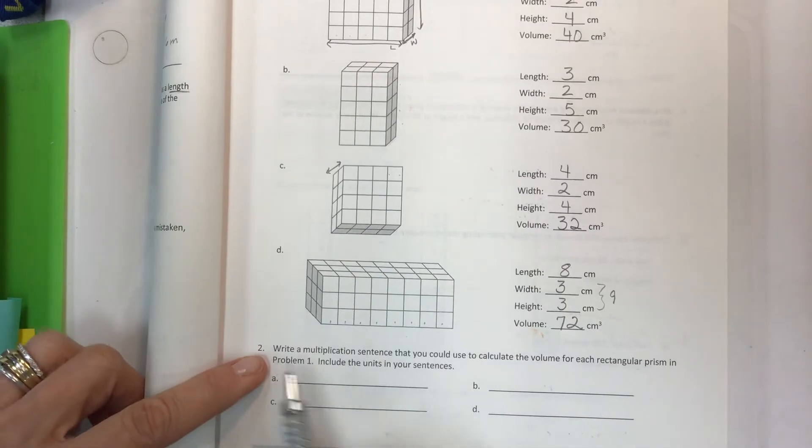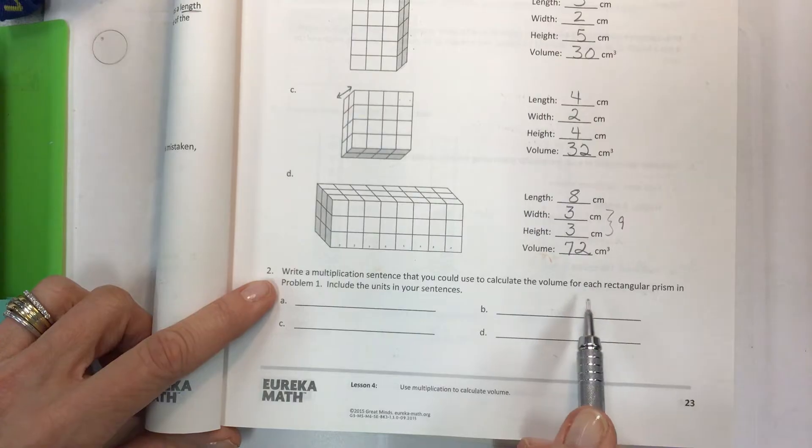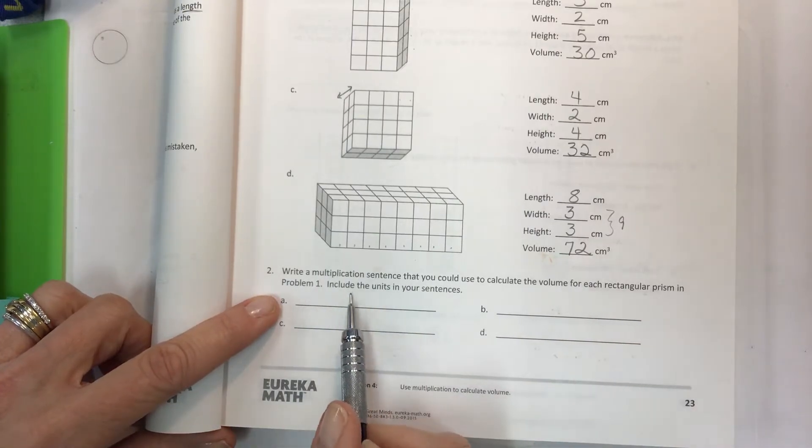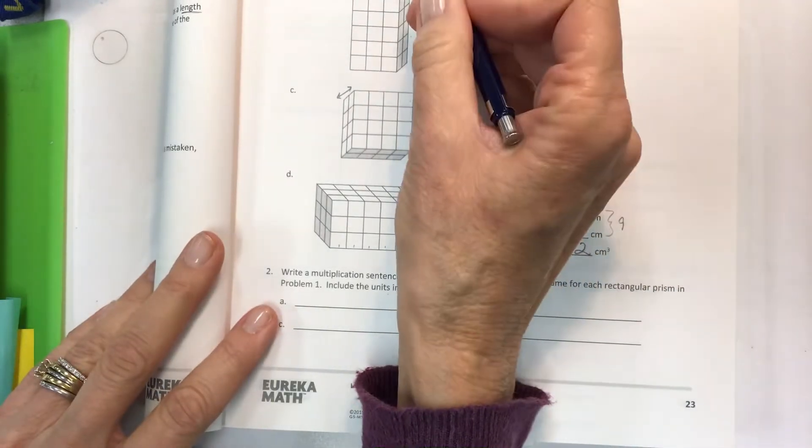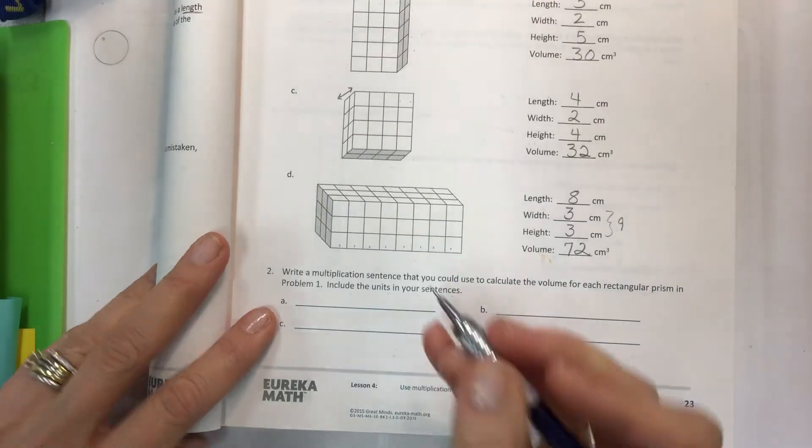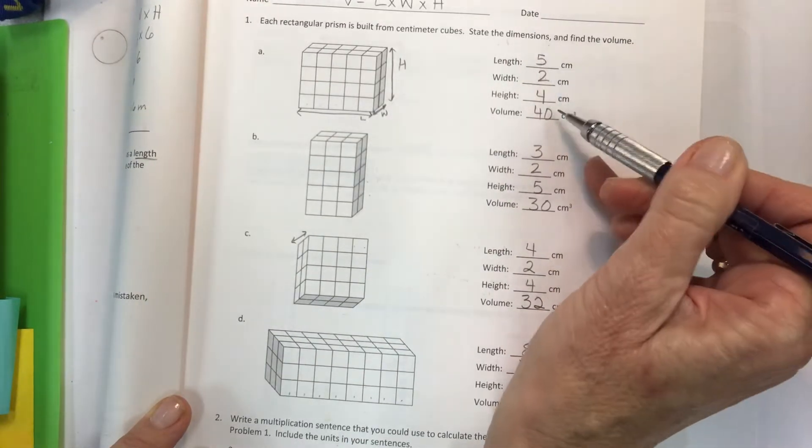For part number two, write a multiplication sentence that you could use to calculate the volume for each rectangular prism in problem one. Include the units in your sentences. What we're talking about is just set it up with the formula that you have on the top of the page, and so you're taking the numbers from this that you actually already know and the answer.